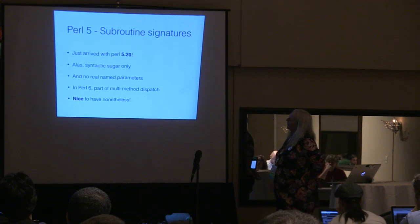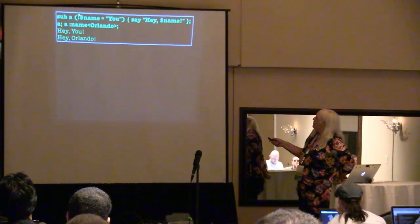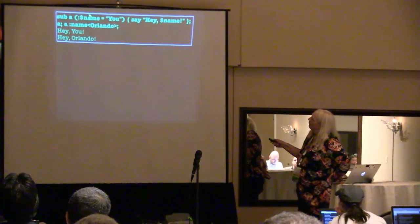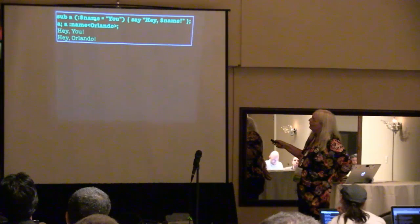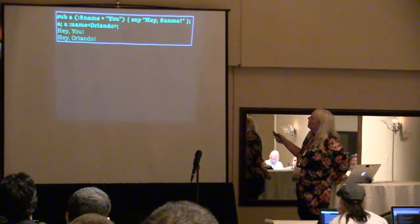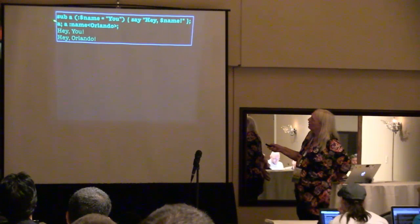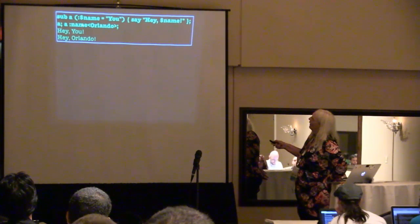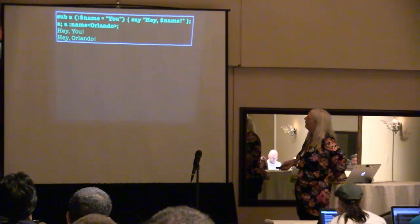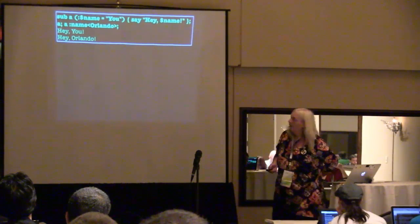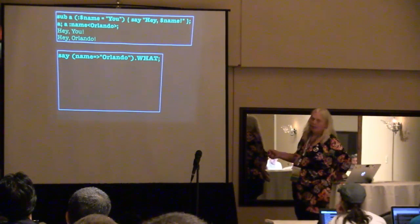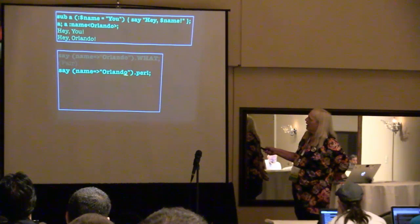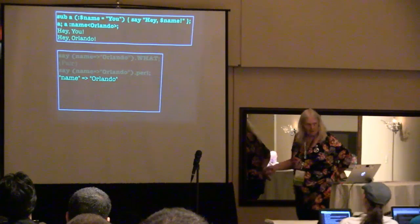So what are named parameters in Perl 6 like? You can specify them using the colon. The name of the named parameter is 'name', the default — if you don't specify it — is 'you'. So if I call it without any parameters it says 'hey you', and then if we call it with name Orlando, it says 'hey Orlando'.